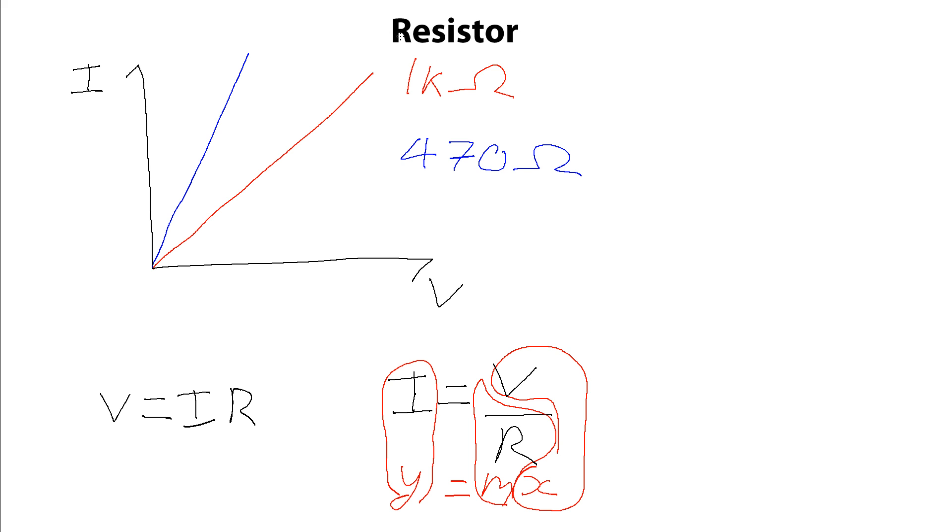Similarly if we had a larger one, so if we had a 2.2K resistor, then we would have a shallower gradient here. So 1 over the resistance for the gradient.